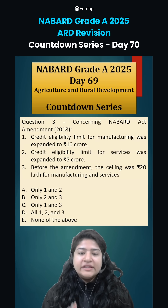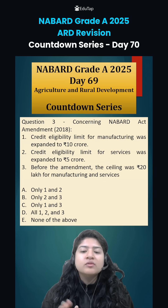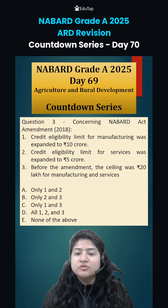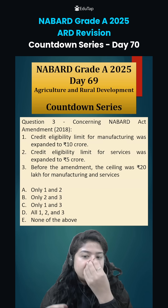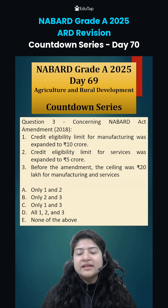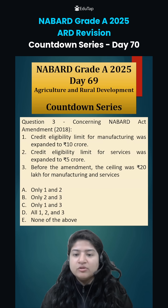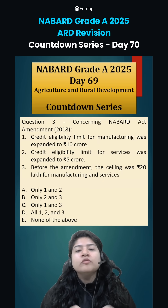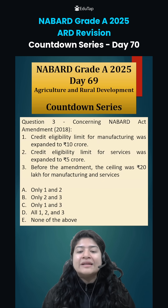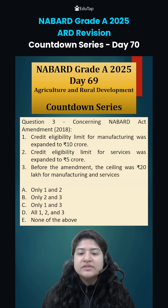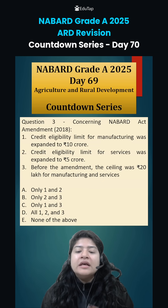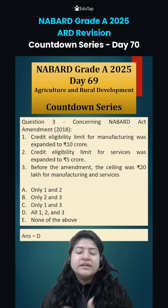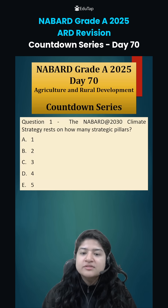Finally, as per the NABARD Act amendment: the credit eligibility limit for manufacturing has been expanded to 10 crore, for services it is 4 to 5 crore. Before the amendment, the overall ceiling was 20 lakh for both manufacturing and service sectors. All three statements are correct, so option D is the correct answer.